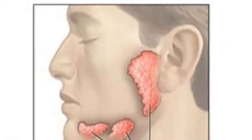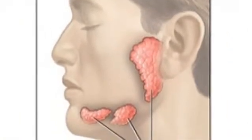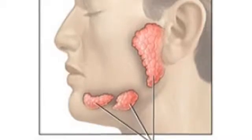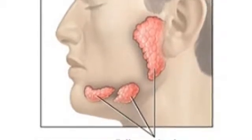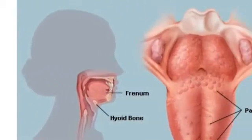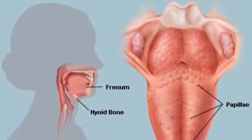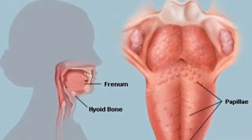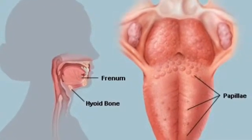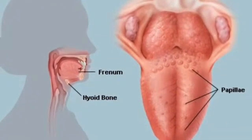The salivary glands produce and secrete saliva, which moistens the food allowing it to go down the esophagus easier. The tongue helps to roll chewed food — in this case chicken — into a mass of chewed food known as a bolus.